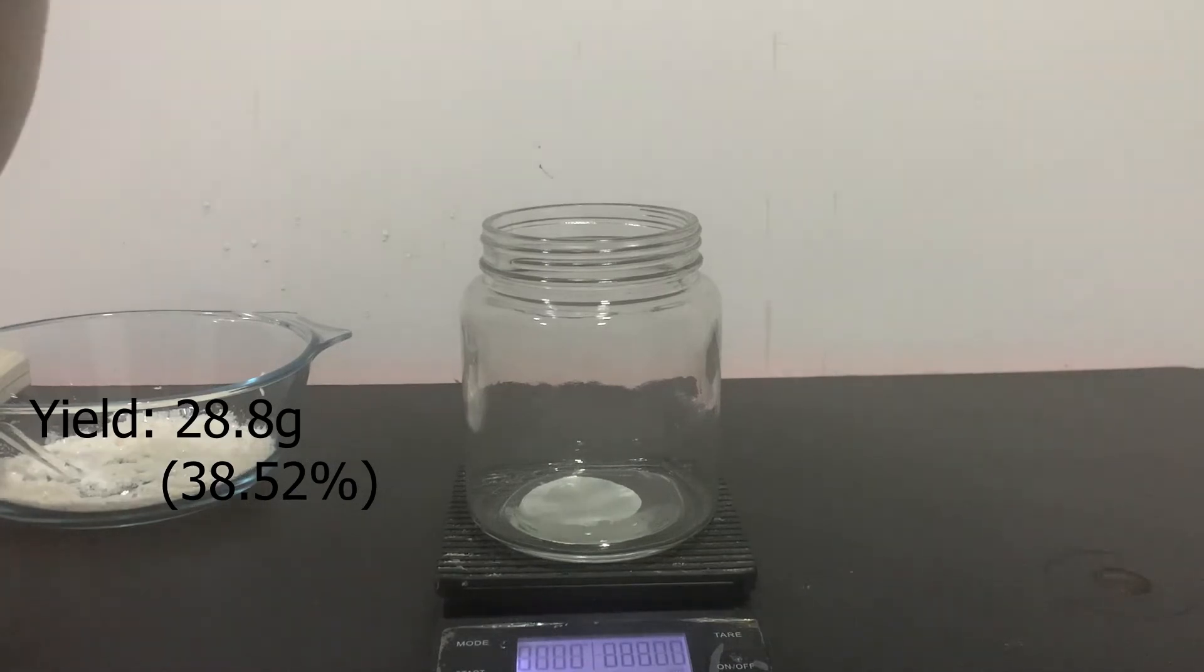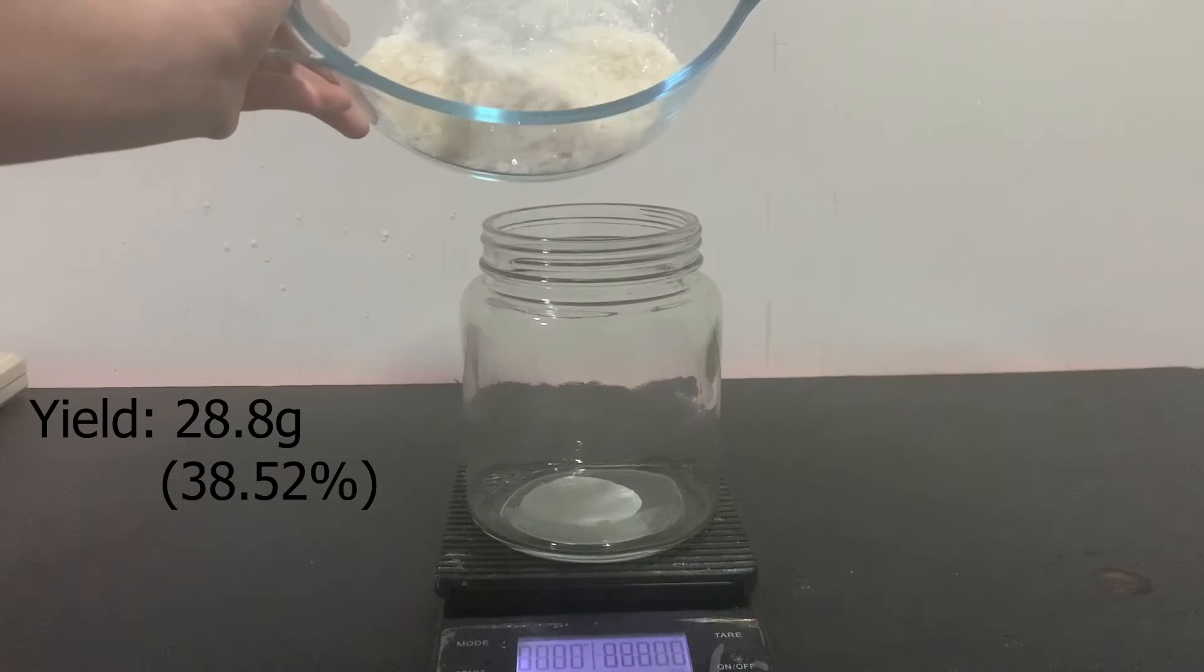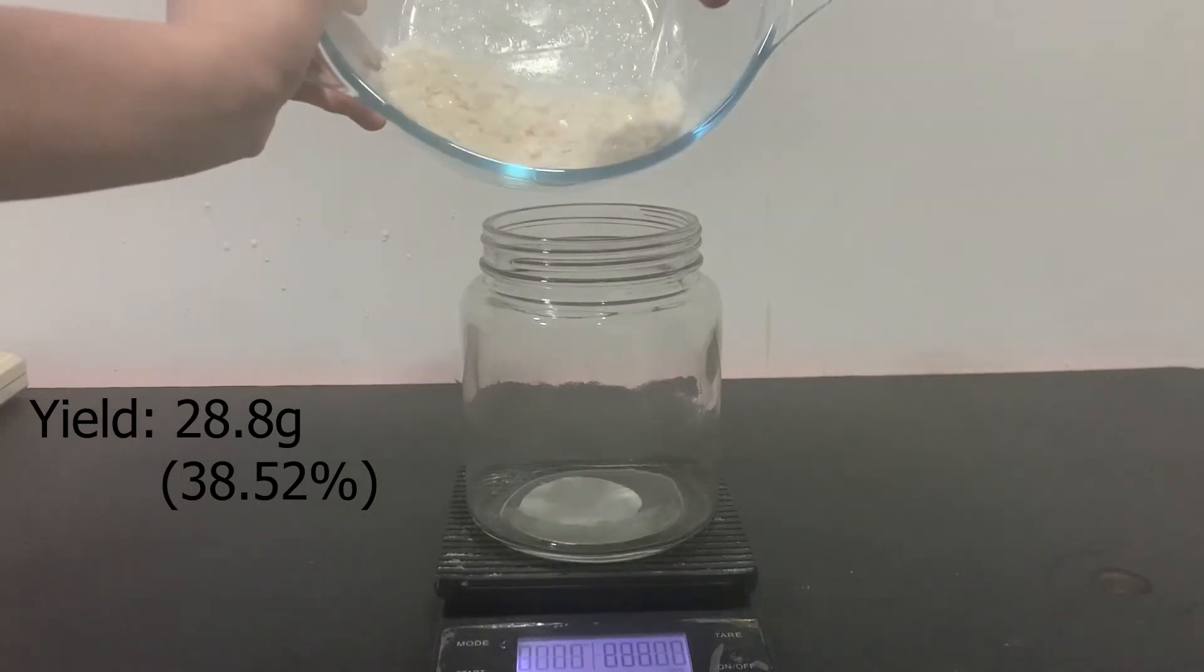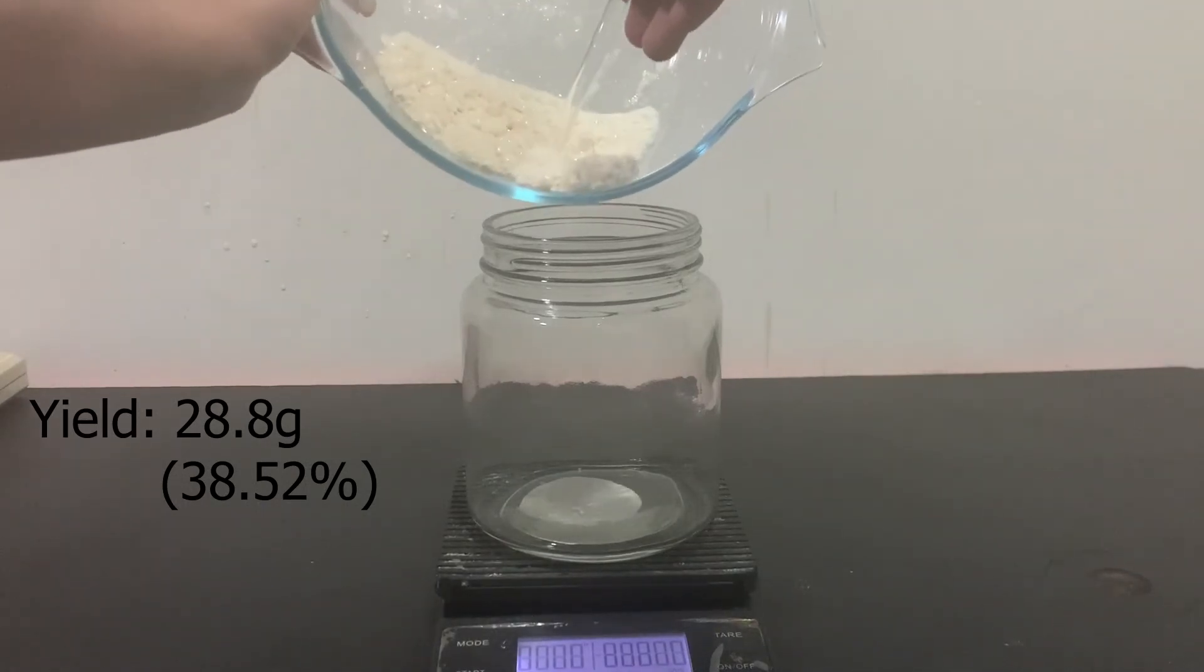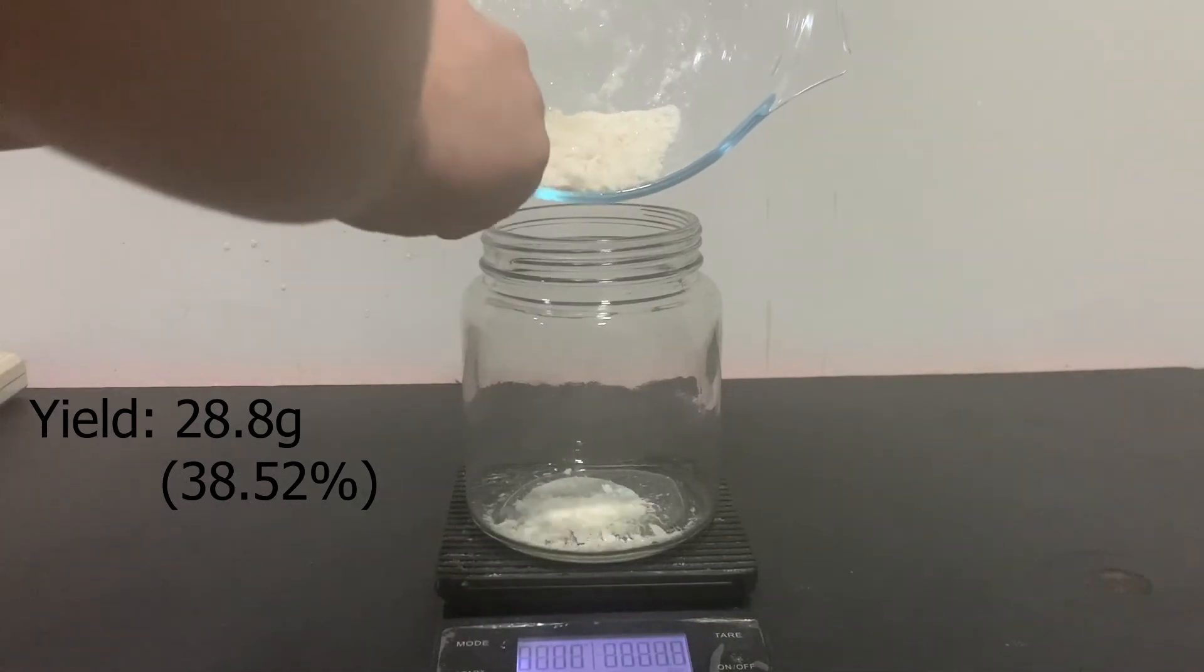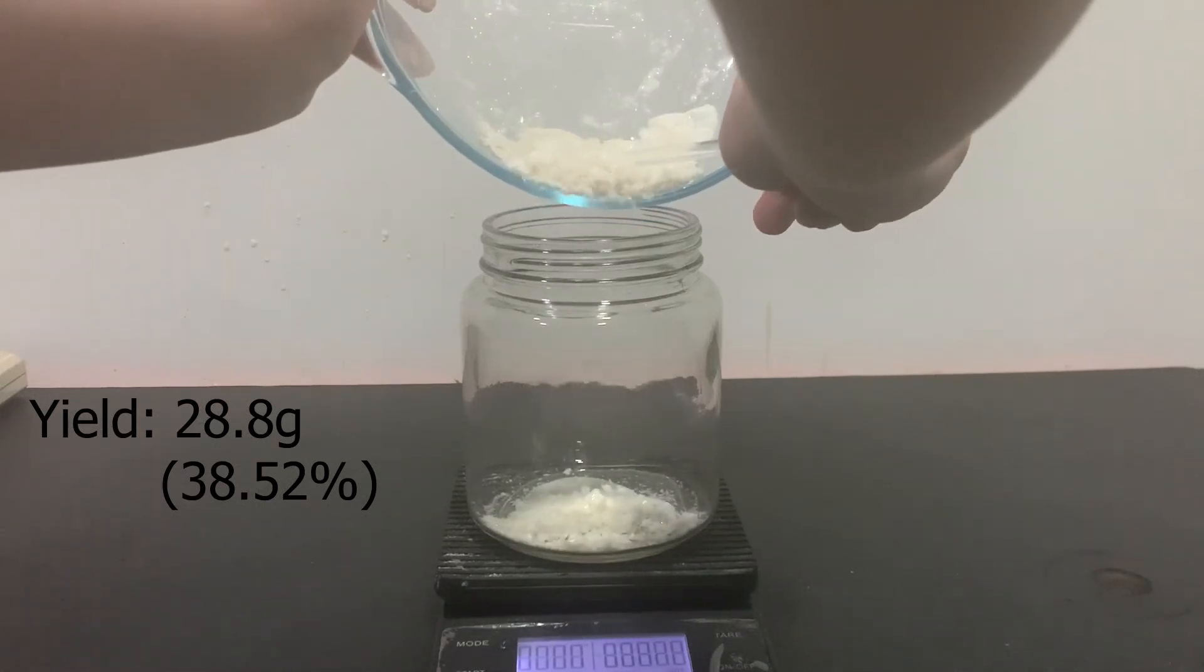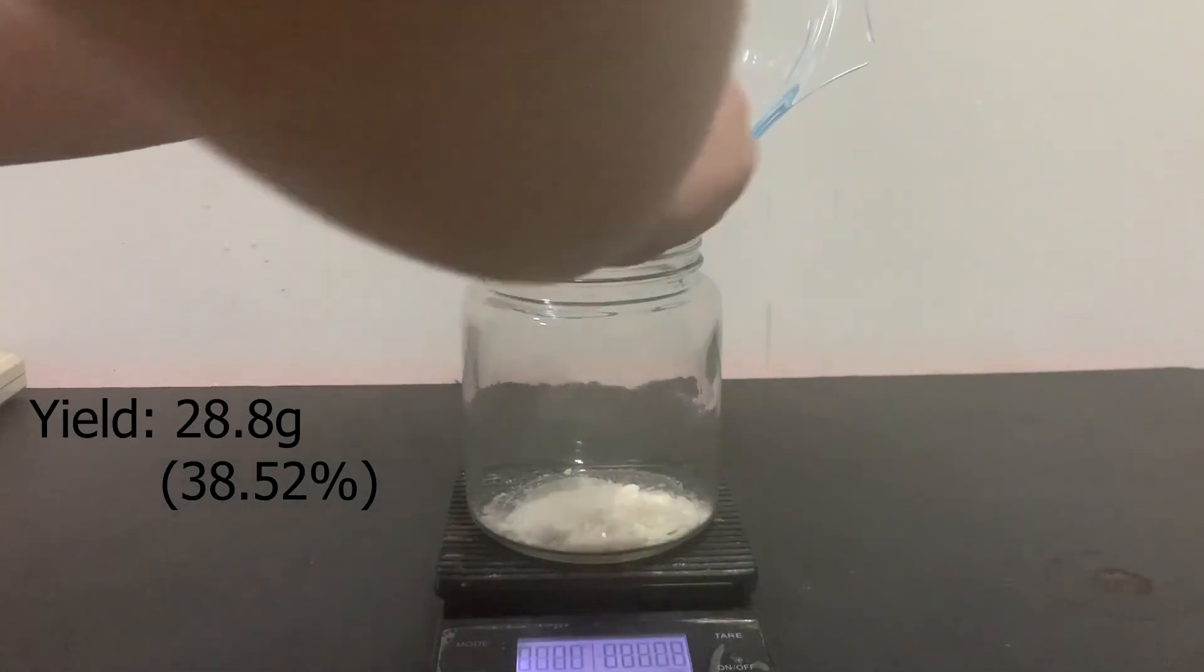I then measured the yield of acetanilide. The yield came to be low at 28.8 grams with a percentage of 38.52%. The yield could be improved if the reflux was allowed to continue overnight and if I also had not tried to filter the solution.